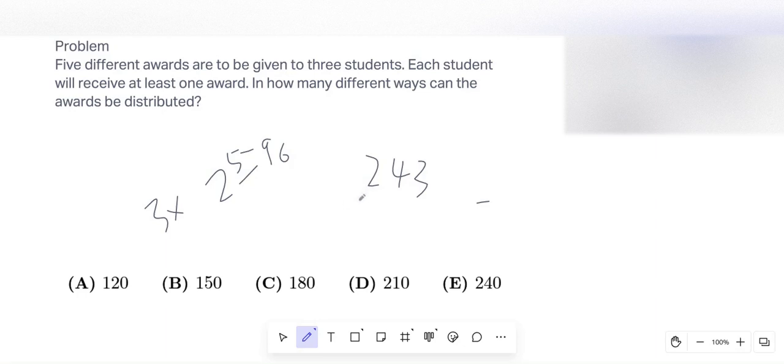Anyways, we can't just say 243 minus 96 and call it a day. Because if two people don't get any, let's call these guys X, Y, Z. If Z doesn't get any, and Y doesn't get any, then X has all five of them, right?